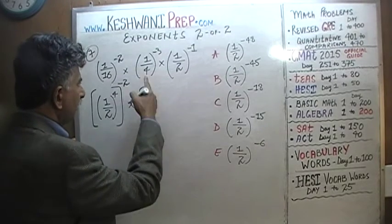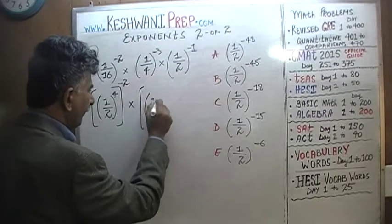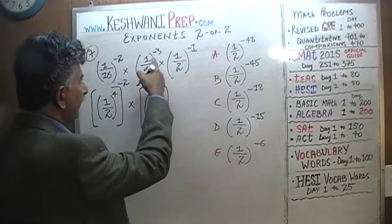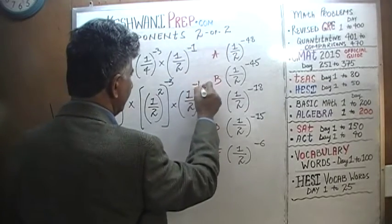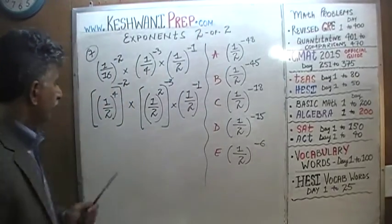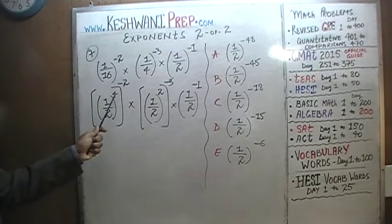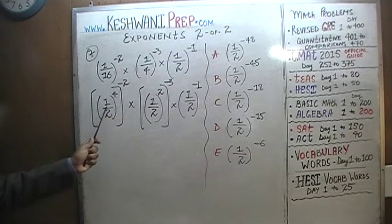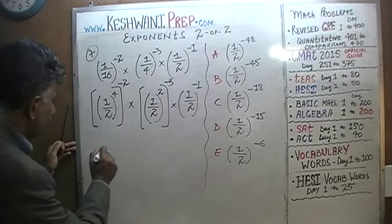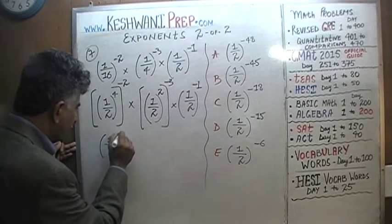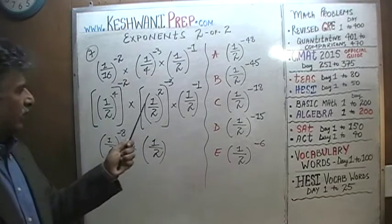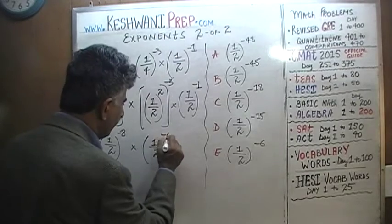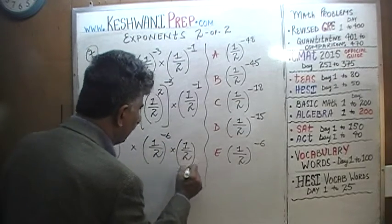Similarly, 1/4 can be written as (1/2) squared, and outside we have negative 3. The third part, (1/2) raised to negative 1, doesn't change anything — it stays as is. So we have (1/2)^4 raised to negative 2, which means we multiply the two exponents: 4 times negative 2 gives us (1/2) raised to negative 8. Then times (1/2) raised to 2 times negative 3, which is negative 6.